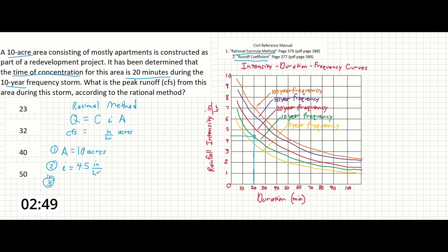So finally, we can search for C. In this case, the problem notes that the area consists of mostly apartments, and this is actually important because as we search our runoff coefficient table, we will see that there is a section for residential. And apartment dwelling areas has its own runoff coefficient called out, and this could be anywhere between 0.5 to 0.7. Now, in this case, we're looking for peak runoff, so it would make sense for us to use the largest value. So we're going to use 0.7 here.